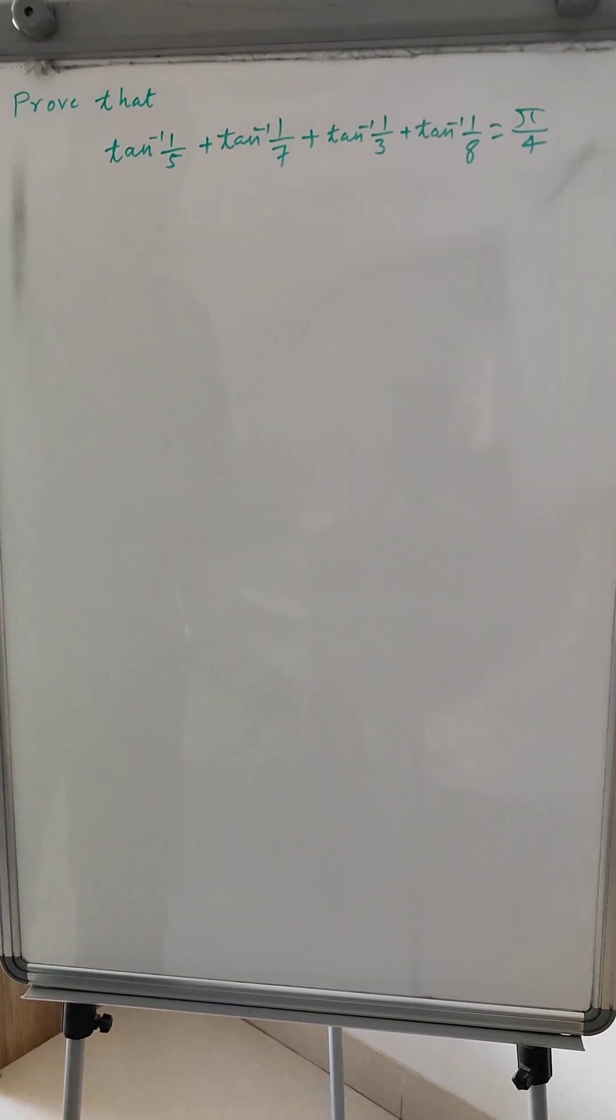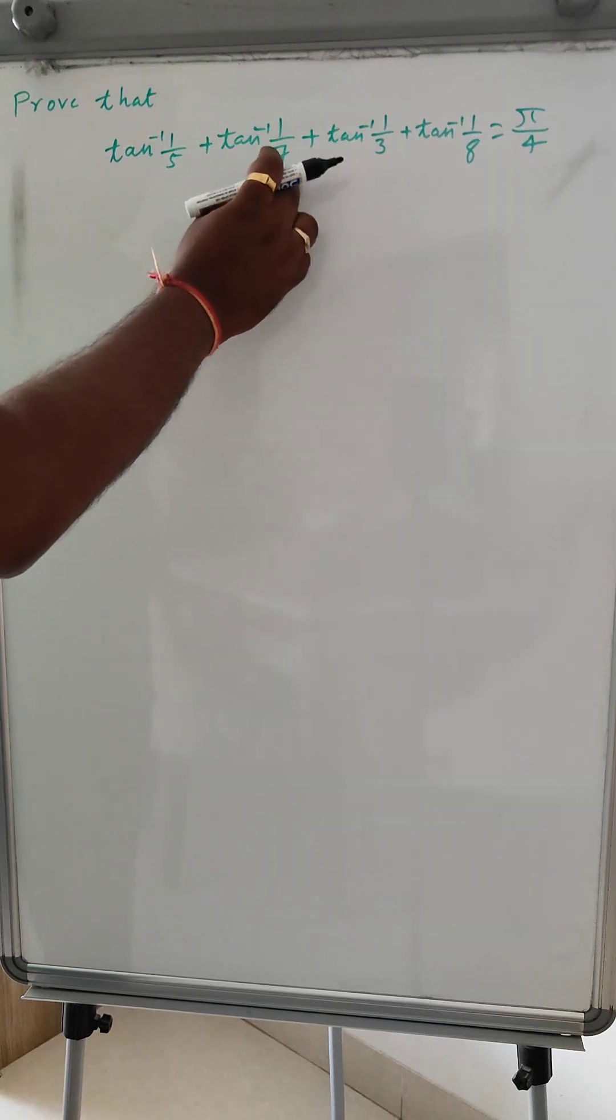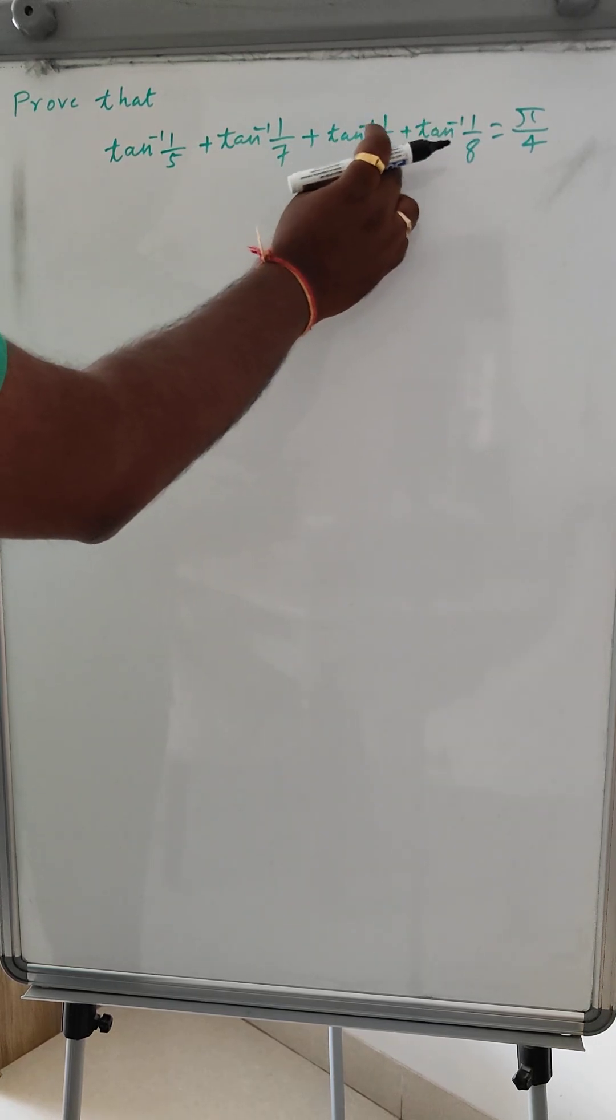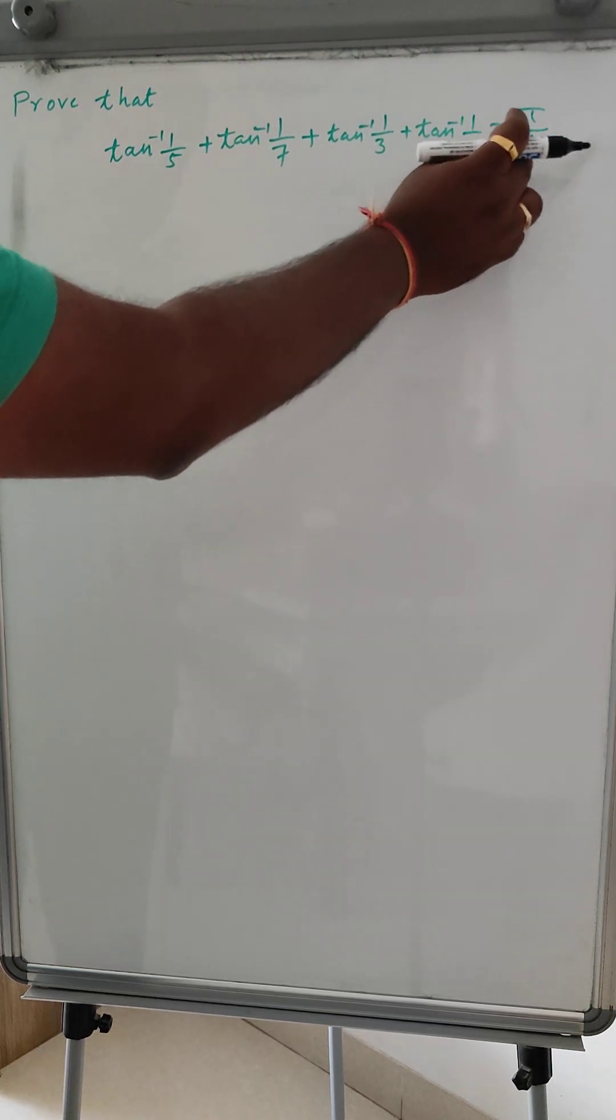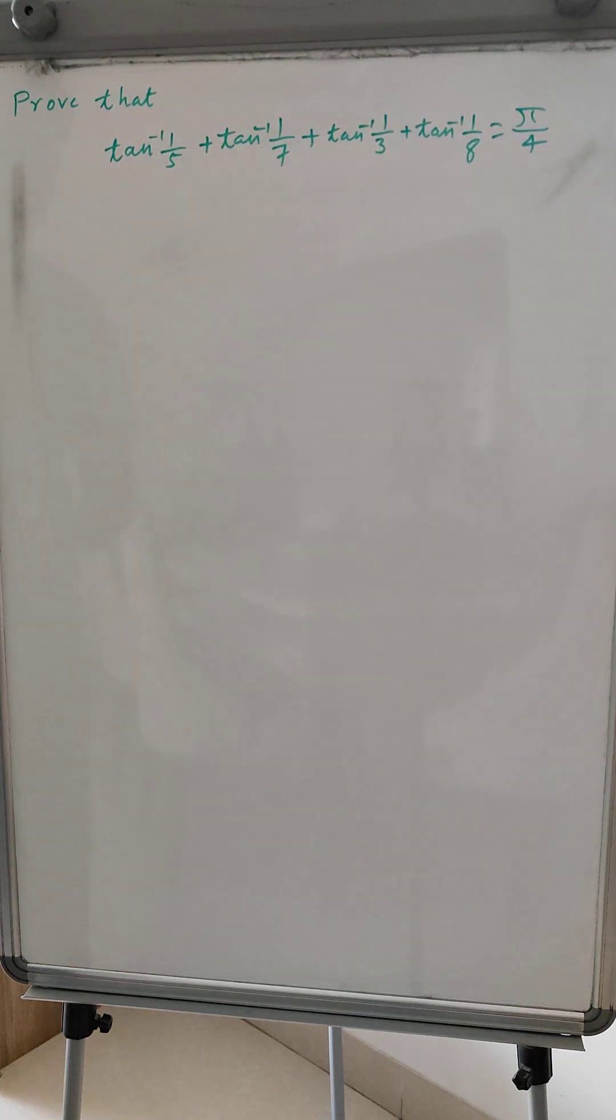Hi everyone, so today we are going to prove that tan inverse 1 by 5, tan inverse 1 by 7 plus tan inverse 1 by 3 plus tan inverse 1 by 8 is equal to pi by 4.